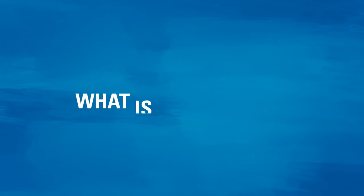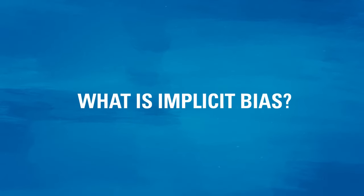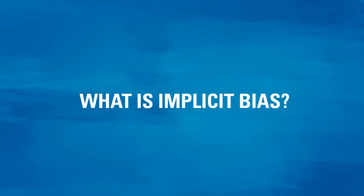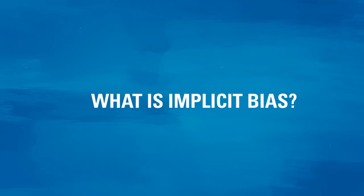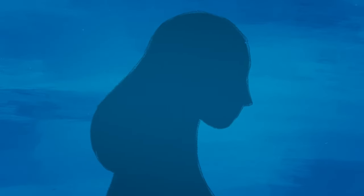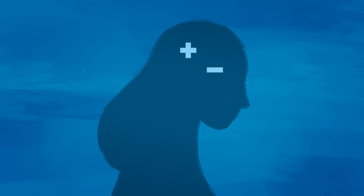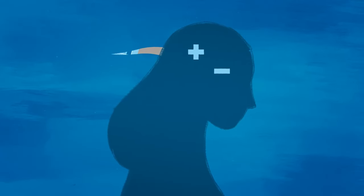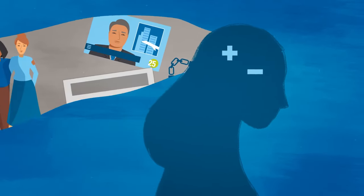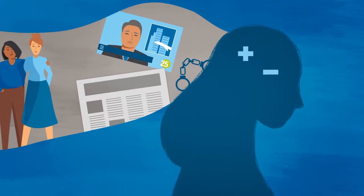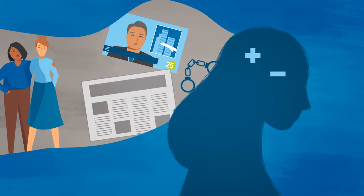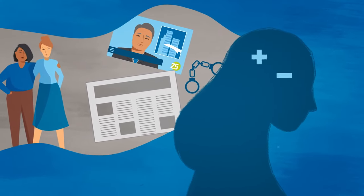What is implicit bias? Implicit bias is an attitude someone has, either positive or negative, without being aware of it. They're developed over a lifetime of exposure from other people and the media, and usually these assumptions drive people's actions.